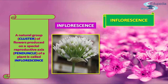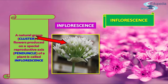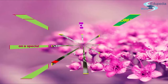Inflorescence is defined as a cluster or group of flowers arranged on a stem, which comprises a main branch or a complicated arrangement of branches. Inflorescence is basically the part of the shoot of flowering plants where the flowers are formed and modified accordingly. It is defined as a reproductive part of a plant which bears a group of flowers in a specific pattern — a natural group of flowers produced on a special reproductive axis, that is the peduncle.